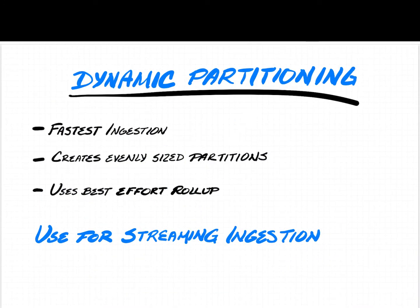In summary, dynamic partitioning is the fastest ingestion because it's a single phase — processing data once and producing segment files. It produces evenly sized segments for the most part: with max rows per segment set to 5 million and 25 million rows, you get five files of exactly 5 million rows. With 21 million rows you'd get four partitions of 5 million and one of 1 million — some smaller residual segments — but in general it produces the size you're asking for.